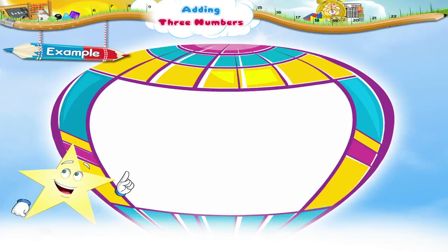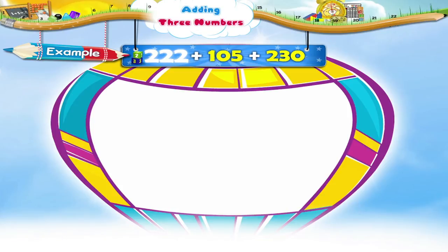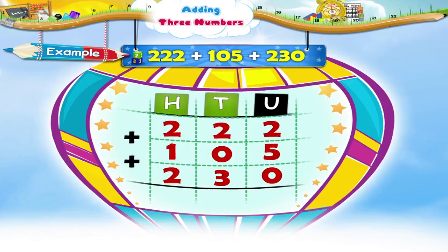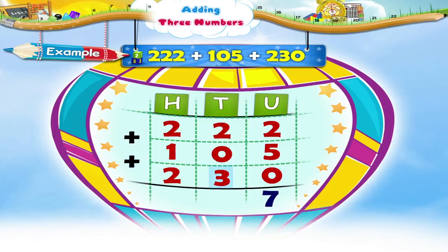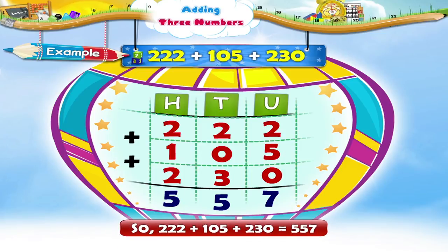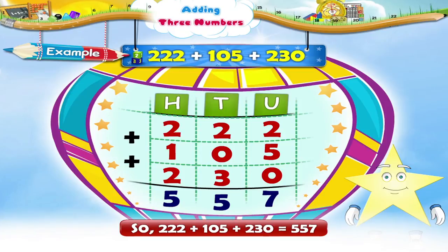Let us solve another example: two hundred and twenty-two plus one hundred and five plus two hundred and thirty. In the units place, two plus five plus zero equals seven. In the tens place, two plus zero plus three equals five. In the hundreds place, two plus one plus two equals five. So the answer is five hundred and fifty-seven. Today we have learnt how to add three numbers up to three digits.